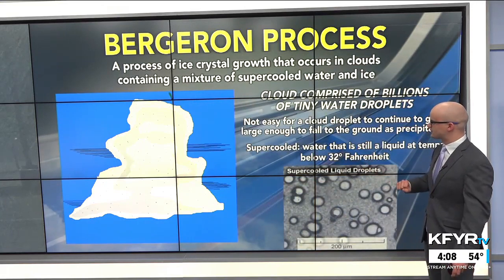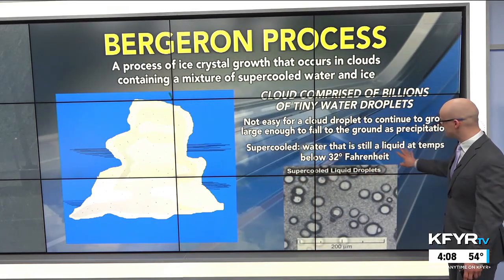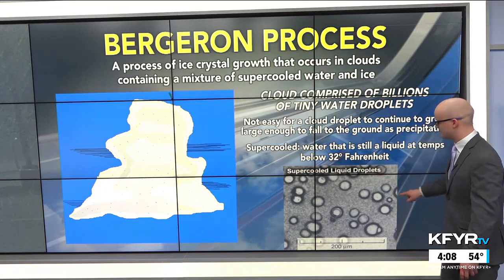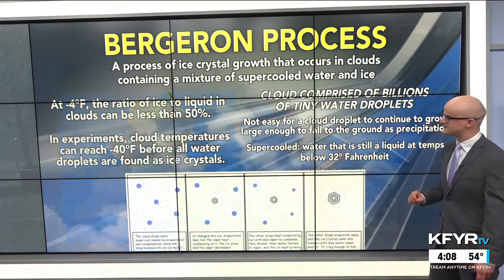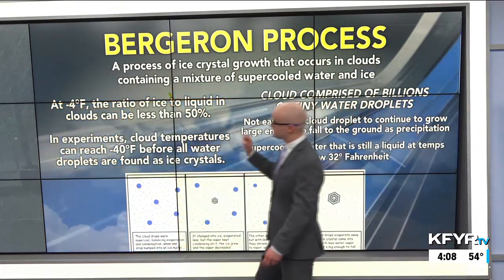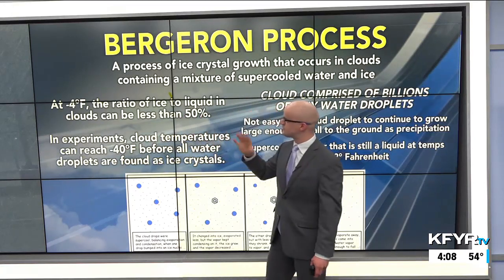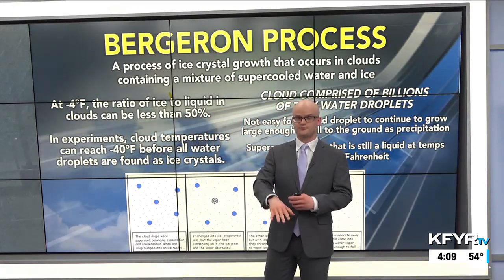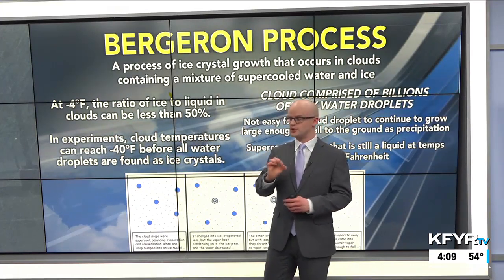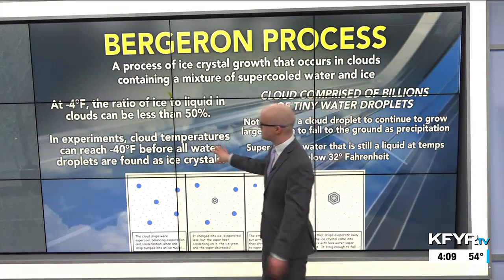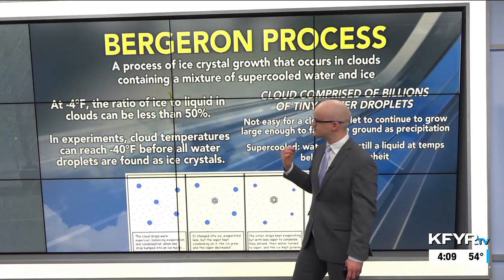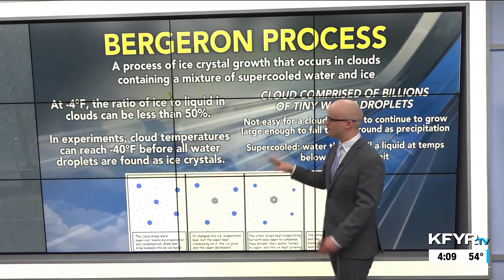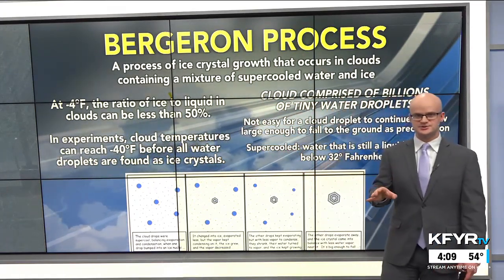Supercooled water droplets are water still in liquid form at temperatures below 32 degrees Fahrenheit, and they're microscopic in these clouds. At minus four degrees Fahrenheit, the ratio of ice to liquid in the clouds can be less than 50%. So even when we're well below freezing, we can still have those liquid water droplets. In experiments by scientists, cloud temperatures can reach as low as minus 40 degrees Fahrenheit before all the water droplets are found as ice crystals.